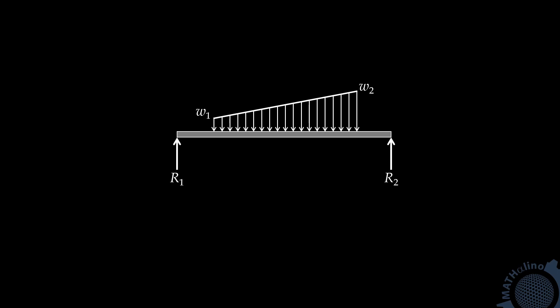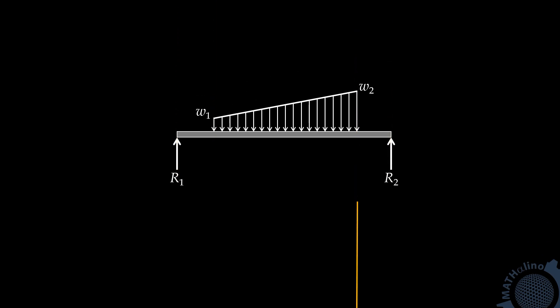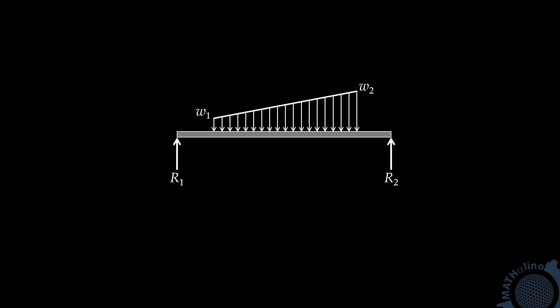I believe you can now manage to draw the moment diagram by parts of this simple beam with trapezoidal load. I encourage you to draw the moment diagram by parts with the moment center at different points. The simplest moment diagram by parts is when you put your moment center at W2. If you locate the moment center at W1, it is still manageable, but the moment diagram by parts is not as clean as with the moment center at W2. If you are brave enough, you can try the moment center at R2 and at R1, but it's impractical because the purpose of this video is to show you how to draw the moment diagram by parts with a moment center that will lead to the simplest diagram.